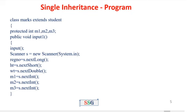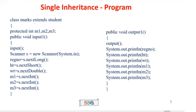The second class is: class Marks extends Student. Marks is the derived class and Student is the base class. Here we declare three variables m1, m2, and m3. In the input_one function, we first call the input function, which calls the base class input method. Then using Scanner, we get the input for register number, height, weight, m1, m2, and m3.